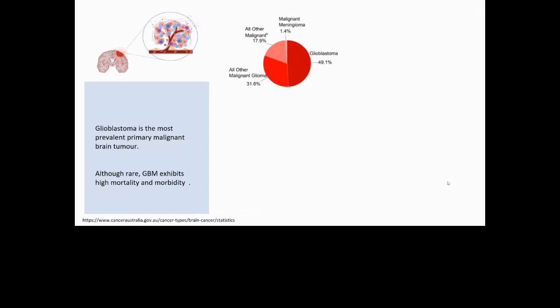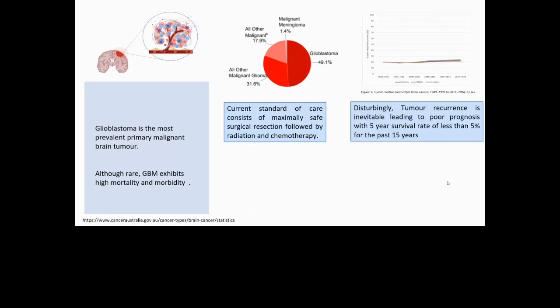As we all know, glioblastoma is the most prevalent primary malignant brain tumor. Although rare, it exhibits high mortality and morbidity. The current standard of care consists of maximally safe surgical resection, which basically means the doctor tries to remove as much of the tumor tissue as possible, followed by radiation and chemotherapy. However, tumor recurrence is still very inevitable, which leads to a very poor prognosis with five year survival rate of less than five percent for the past two decades. We really need to do something about it.